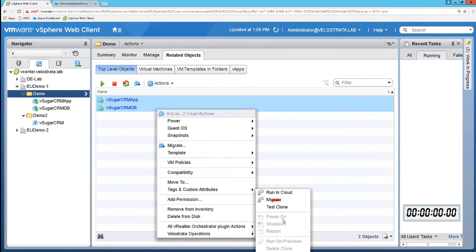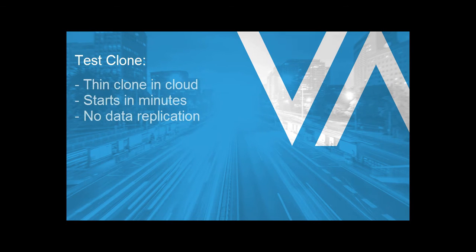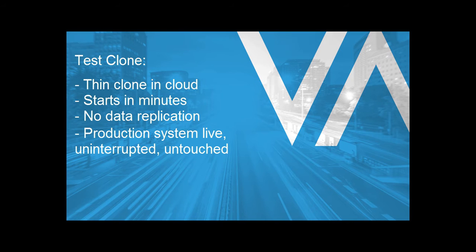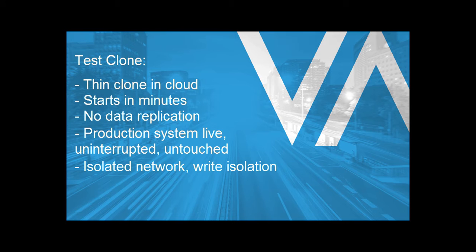That being said, an important part of migration is of course testing, which we're not going to show today, but to support that, Velostrata has the test clone capability, which automatically creates a thin clone in the cloud within a few minutes and with no data replication. The production system remains live and uninterrupted, as this clone operates in an isolated network with write isolation, so any changes made during testing won't propagate back to the production system. It's a really safe, easy way for IT to test workloads in the cloud and find the right configurations before officially migrating.